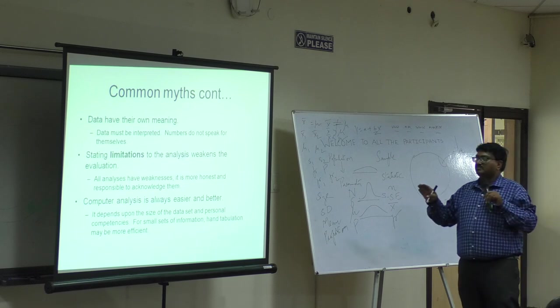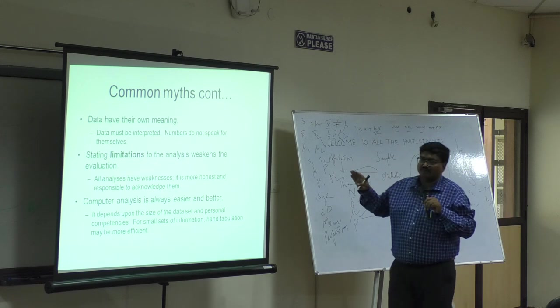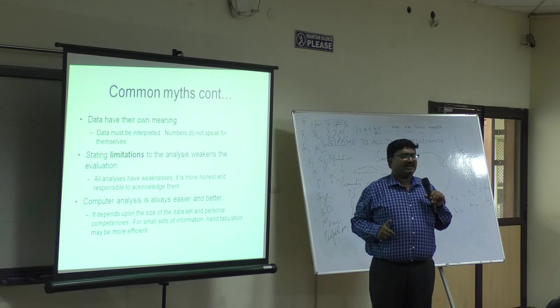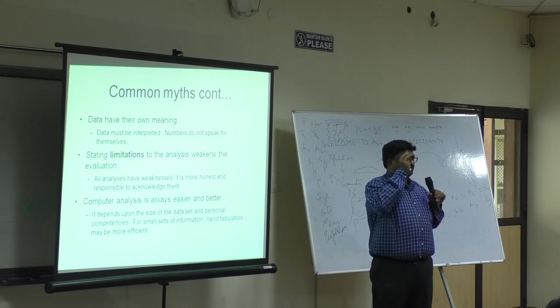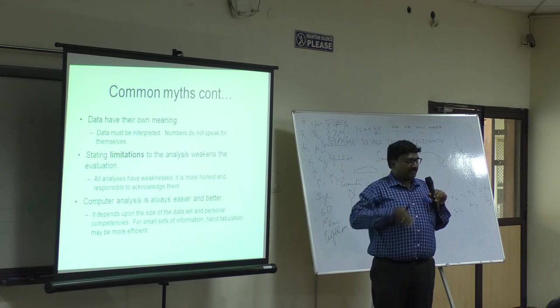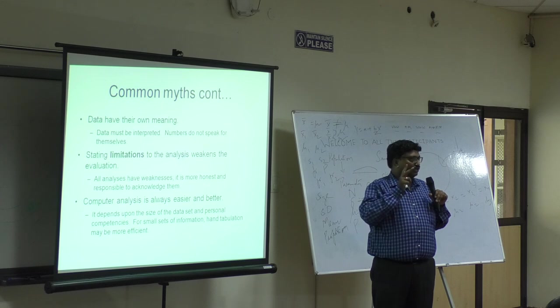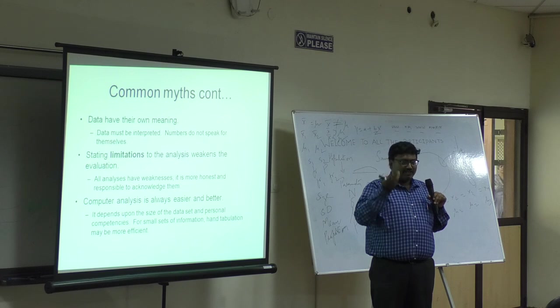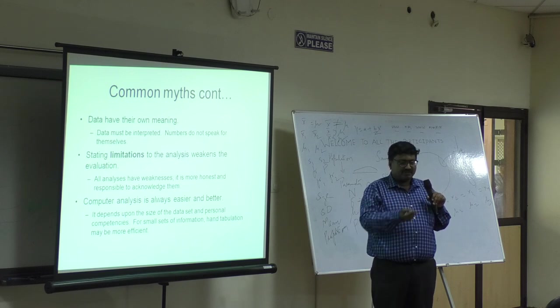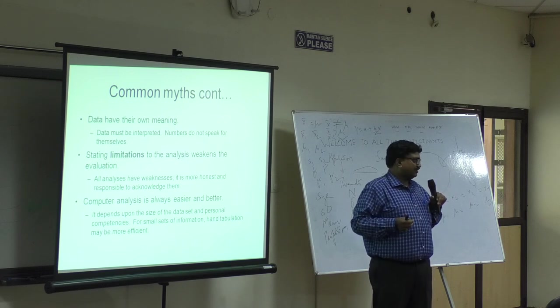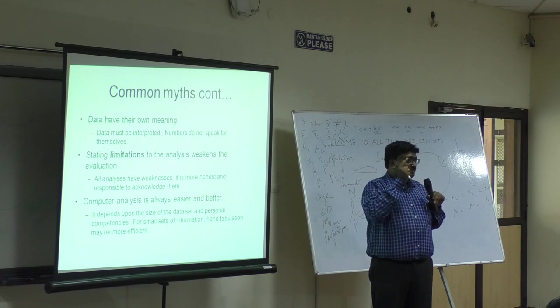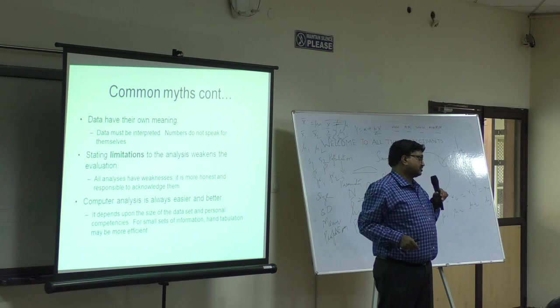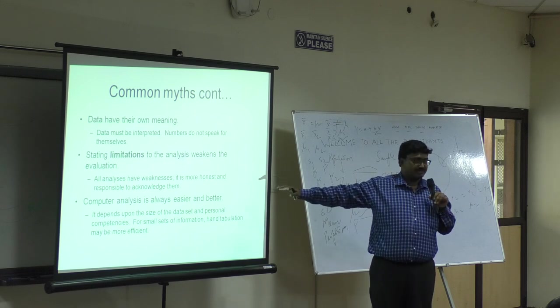Next one is stating limitations will weaken your results. I remember once an ICFI faculty presented a result paper - she had 12 limitations and she had two conclusions. So somebody said, what value are you adding when you have so many limitations and only two conclusions? If I don't give those limitations, people will make wrong interpretations of the conclusions.